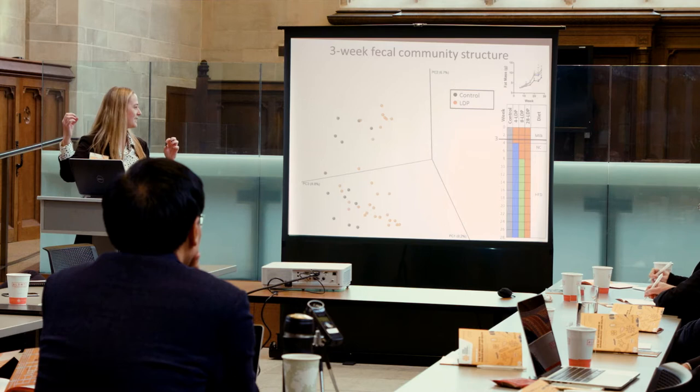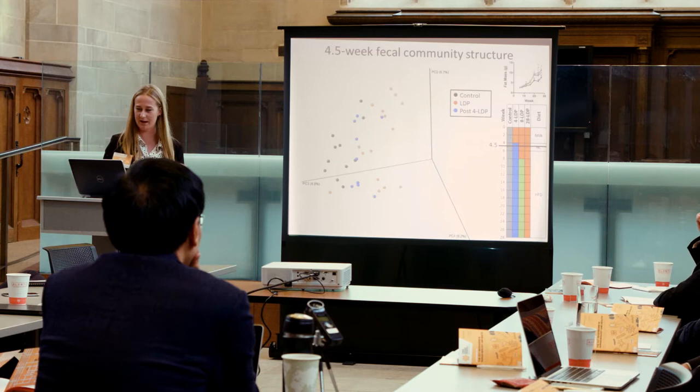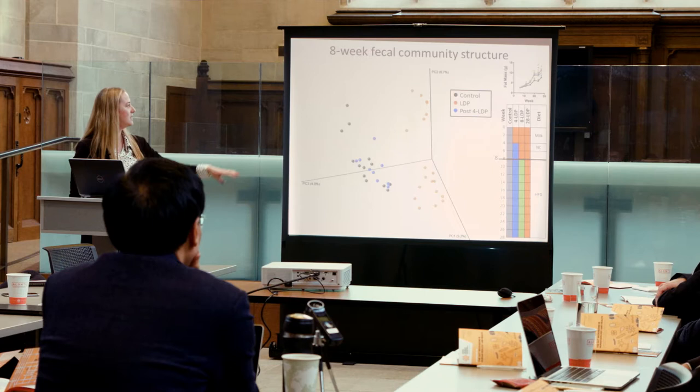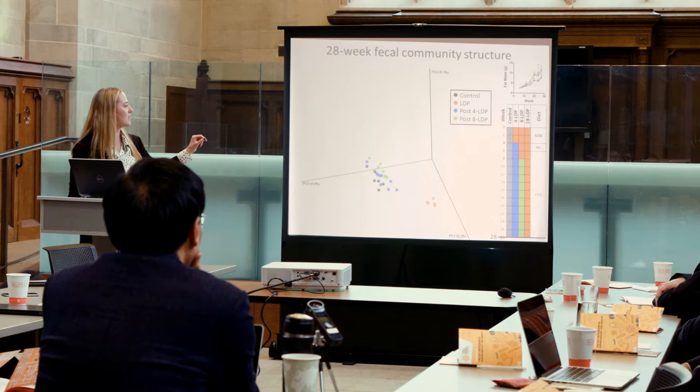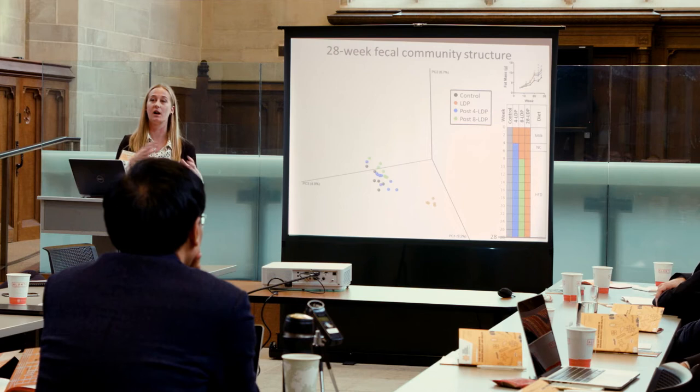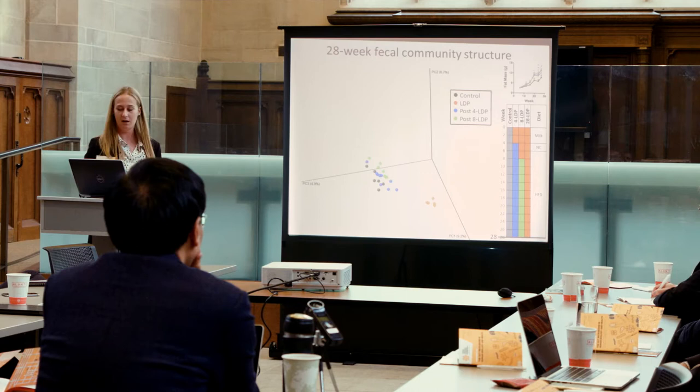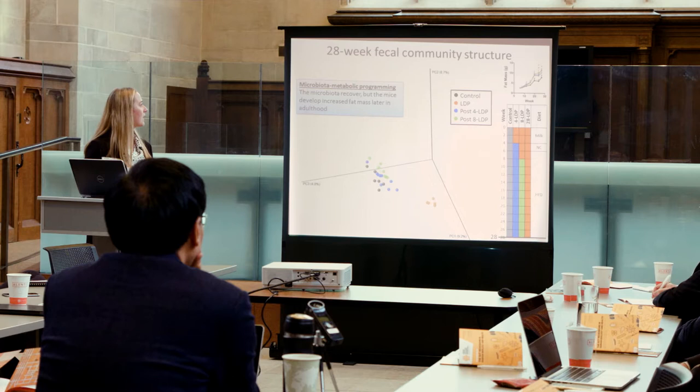What was a surprise is that when we took mice off antibiotics, that blue group went back and clustered with control. At 28 weeks, another group taken off antibiotics also clustered with control, meaning their microbiome had recovered and gone back. But at 28 weeks of life they're actually obese. This is our evidence for microbiota metabolic programming — the microbiota recover, yet the mice develop increased fat mass effects later on in adulthood.